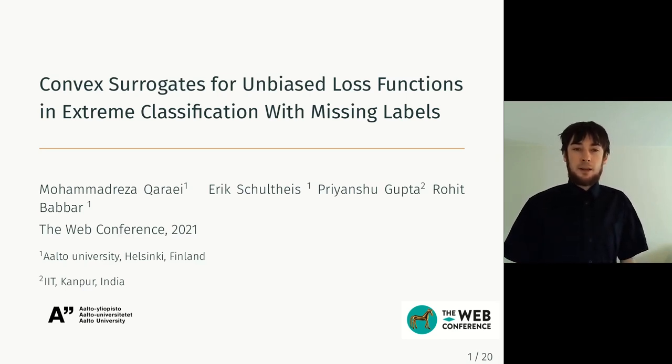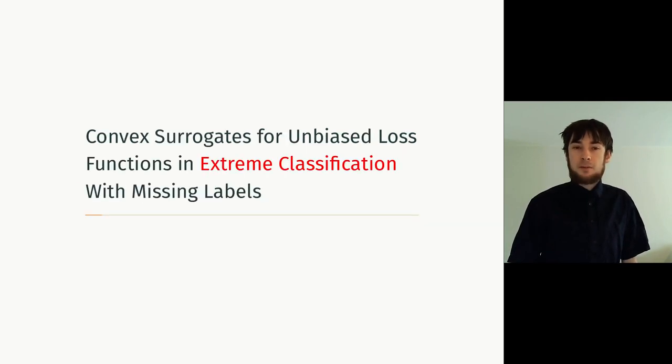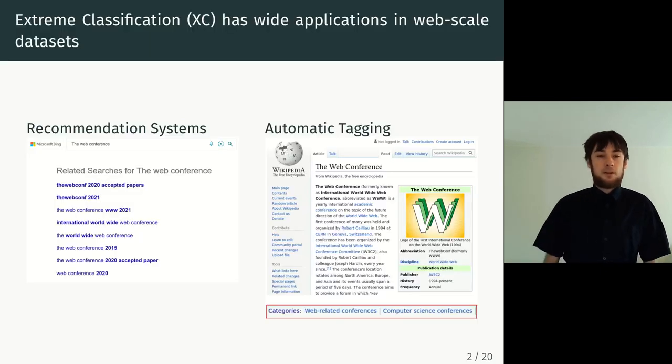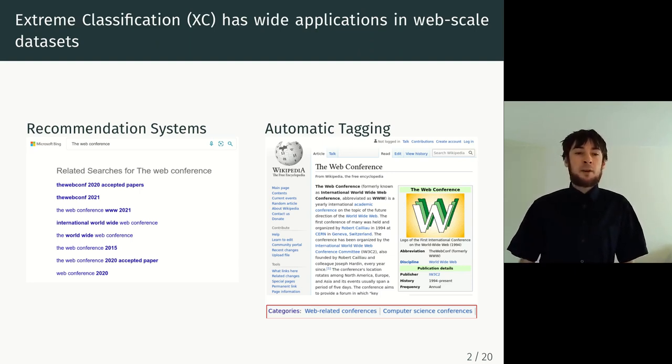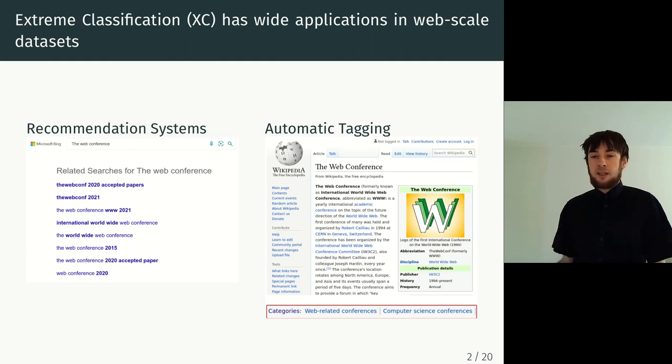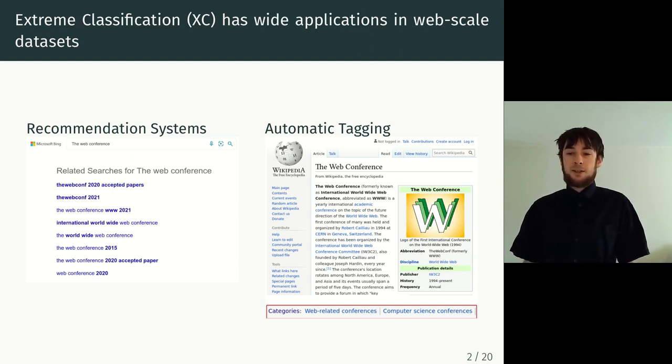To start out with, what actually makes a classification problem extreme? I'll first start by presenting two examples. For one, think about a search engine. If you enter a search string, then typically you will be presented with a list of related searches. In order to do that, the system has to figure out, out of possibly millions of searches that it knows about, which ones are related to yours. Similarly, think if you have just written a Wikipedia article and now would like to have it automatically sorted into different categories. In this case, the system needs to map your article to a few out of hundreds of thousands of categories that Wikipedia knows about.